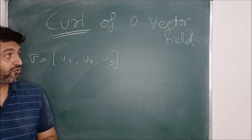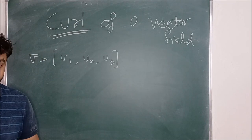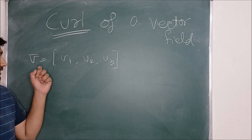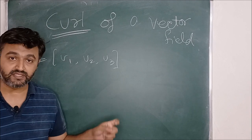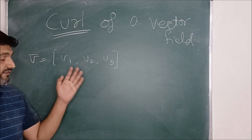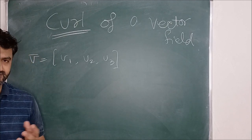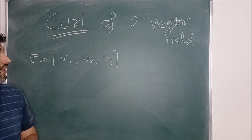Hey everyone. So today we are going to talk about curl of a vector field. Let V bar be V1, V2, V3 — a vector field, where V1, V2, V3 are some functions of x, y, z.